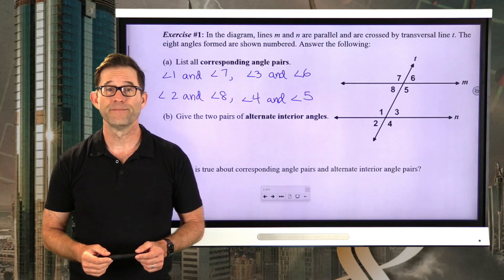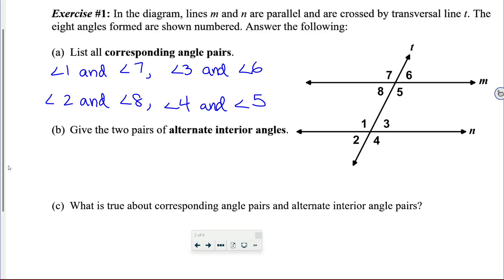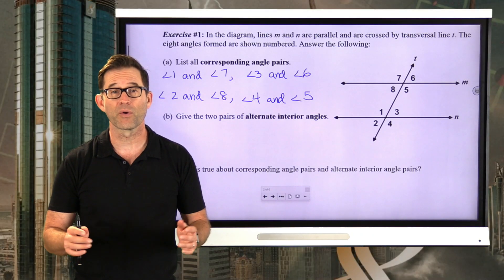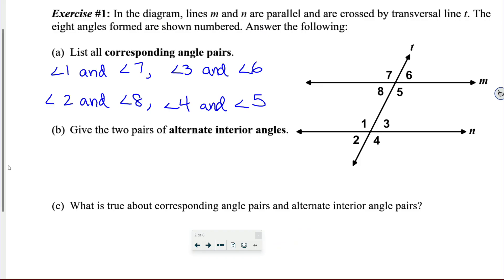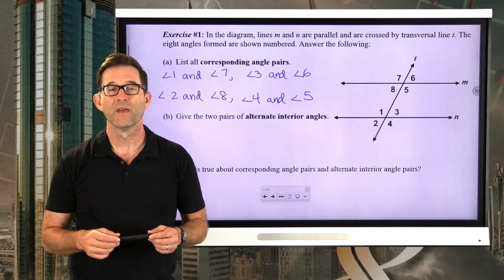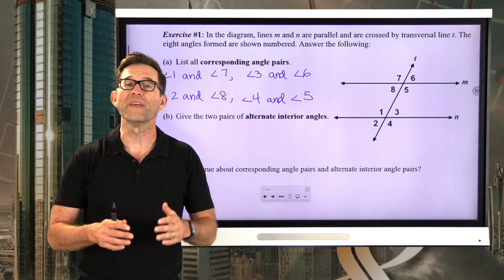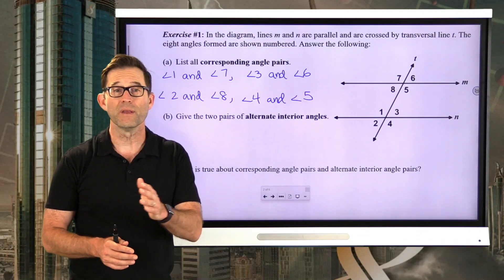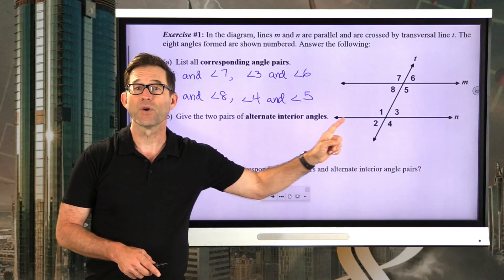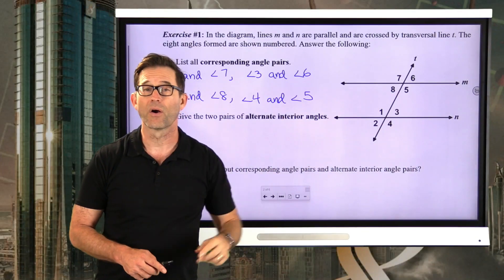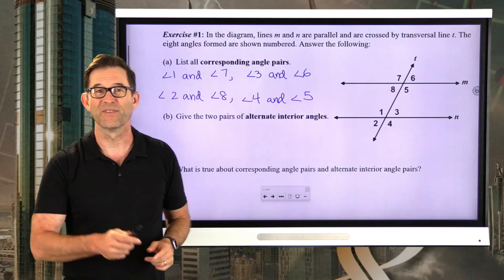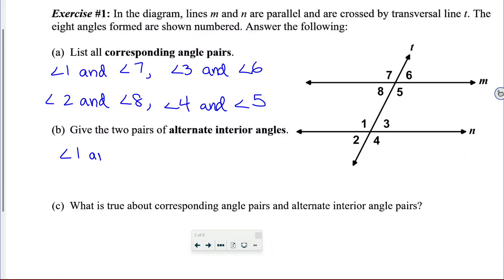Now let's take a look at letter B: give the two pairs of alternate interior angles. Alternate interior angles are also very, very critical. Interior angles are the angles that are on the inside of the two parallel lines. Alternate means they're on opposite sides of the transversal. So angle one and angle five are one alternate interior angle pair, and angle three and angle eight are the other.